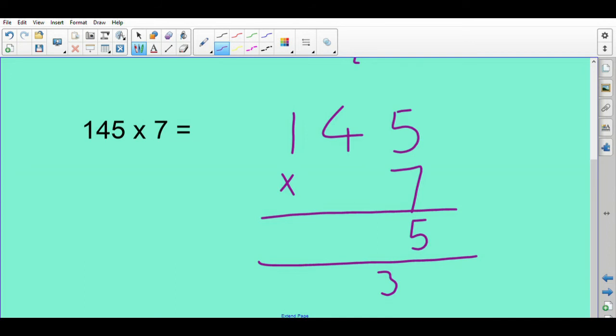4 times 7. 28. Add the 3. It's 31. So put the 1 of the 31 in there. Carry the 3 into there. 1 times 7 is 7. Add 3 is 10. So in there. 1,015.